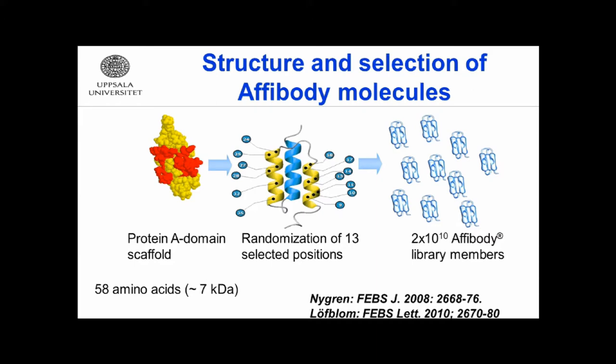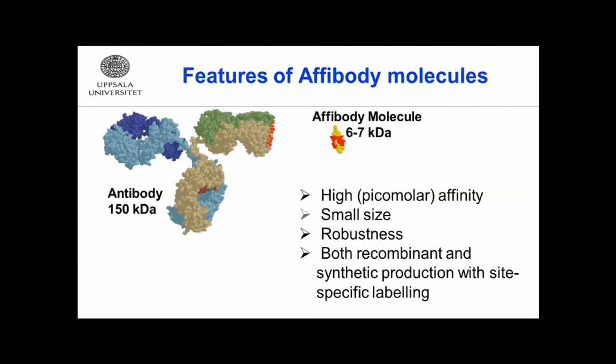A summary can be seen in the review paper cited here. Affibodies can be generated with sub-nanomolar affinities and have been used for many applications, including in vitro imaging and proteomics. Most important for us are their high affinity and very small size — they are twice smaller than, for example, a nanobody. They are very robust and permit both recombinant and synthetic production.